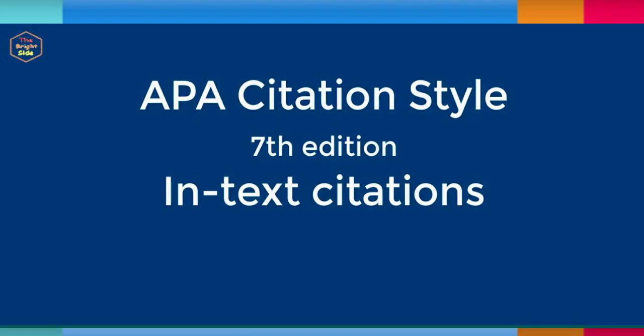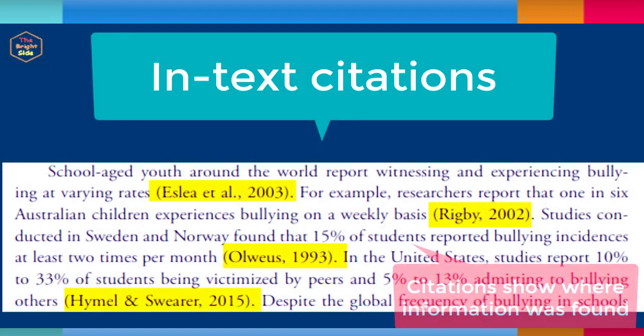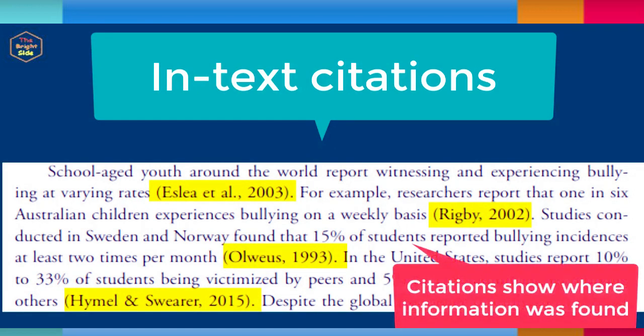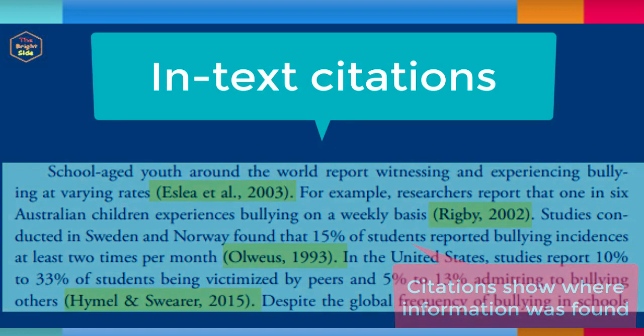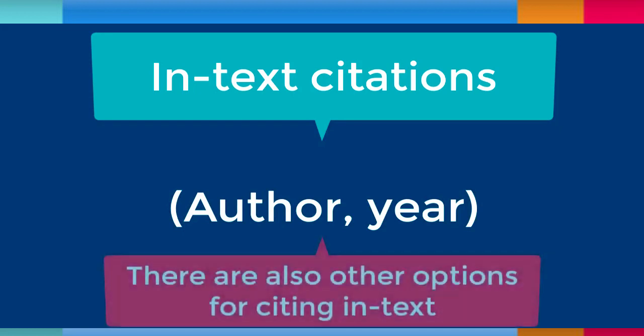In-text citations are found in the body of your paper. Anytime you include information that is not your own, you need to include an in-text citation. APA in-text citations include the author's last name, followed by a comma, then the year of publication.